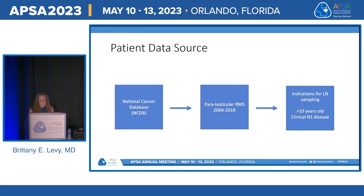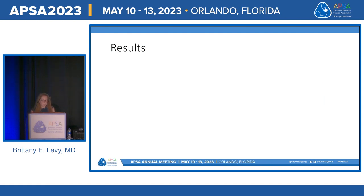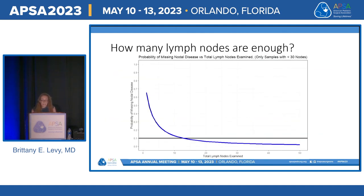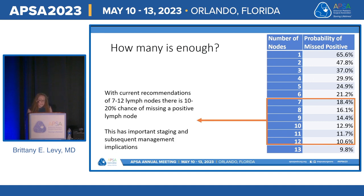Using the NCDB, we queried patients with paratesticular rhabdomyosarcoma from 2004 to 2018 who had an indication for lymph node sampling, yielding 67 patients. We calculated lymph node density as positive nodes over total yield and used the beta-binomial model to determine the number needed to sample to reduce the chance of missing a positive lymph node to less than 10%. The model identified that 13 lymph nodes are needed to reach that threshold. With the current recommendation of 7 to 12 nodes, there is a 10 to 20% chance of missing a positive lymph node and understaging.